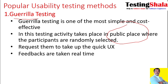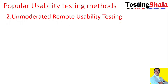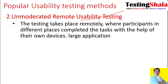The second type is unmoderated or remote usability testing. Here, testing happens remotely — not in one place. People are placed in different locations and help in completing certain tasks using their own devices. Some may have different mobile operating systems, browsers, and so on. We take their help to test on their particular devices and get enough feedback. This method is particularly adopted when we have a bigger application requiring larger test coverage across different operating systems, devices, and browser combinations.